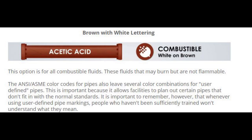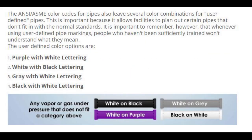Now let's talk about user-defined colors. The ANSI and ASME A13.1 color codes for pipes also leave several color combinations for user-defined pipes. This is important because it allows facilities to plan out certain pipes that don't fit in with the normal standards. It is important to remember, however, that whenever using user-defined pipe markings, people who have not been sufficiently trained would not understand what they mean. The user-defined color options are: purple with white lettering, white with black lettering, gray with white lettering, and black with white lettering.